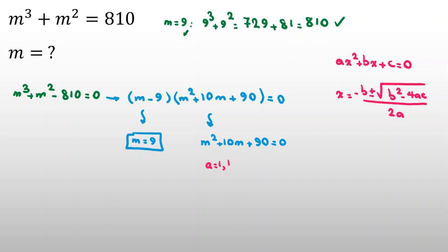Now, in this example, a is 1, b is 10, c is 90. Now, m is what? Negative b plus minus square root of b squared 10 squared minus 4ac times 90, over 2a, which is 2 times 1.